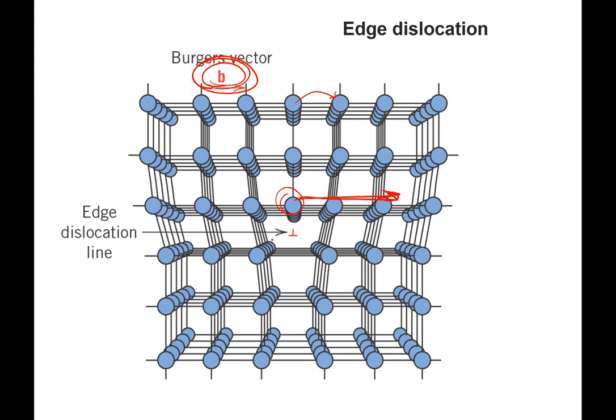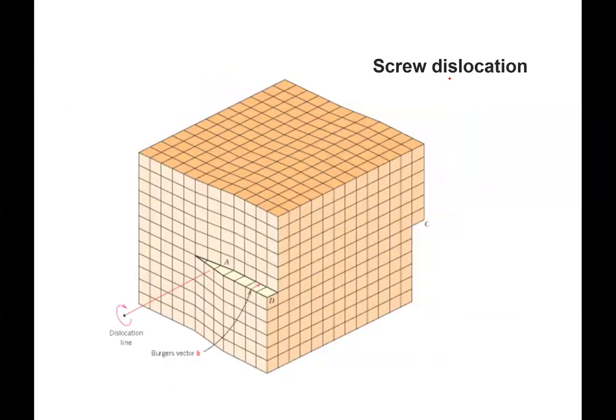So that's our edge dislocation. Eventually, when it gets over to the side, this will break and I'll end up with this sticking out.